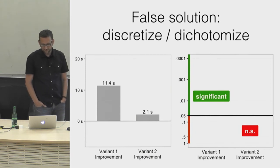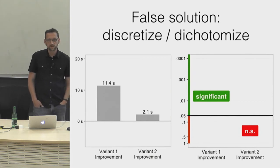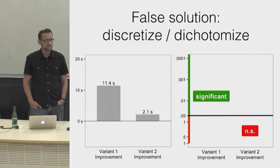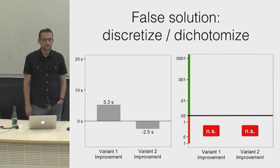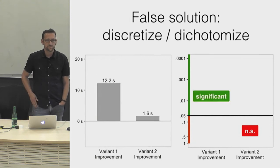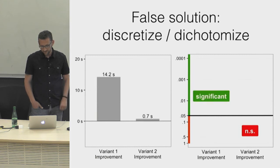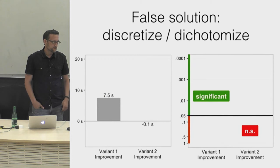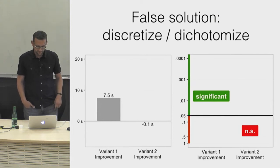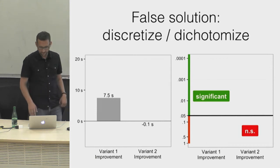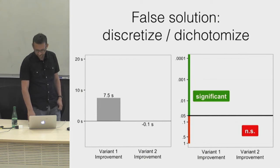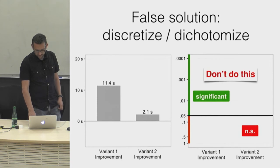Two p-values on the same side of the threshold will look exactly the same — that might seem good — but two p-values on either side, even close together, will look very different because we interpret significant results very differently from non-significant ones. So the dance doesn't stabilize; it only becomes more jerky and loses information. Other problems include encouraging dichotomous thinking and being one of the causes of p-hacking and publication bias.